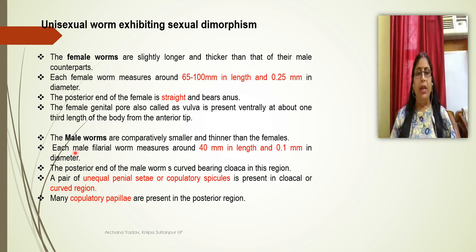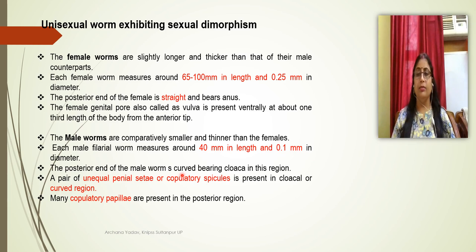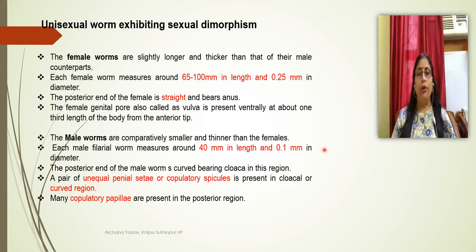The male worm is comparatively shorter, smaller, and thinner than the female. The male filarial worm measures 40 mm in length and 0.1 mm in diameter. The posterior end of the male worm is curved and bears unequal copulatory spicules present in the cloacal region.